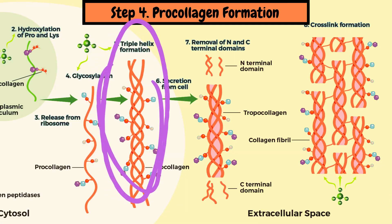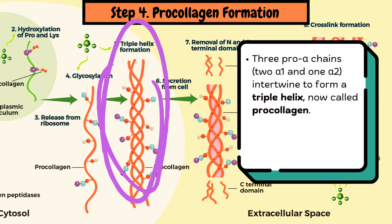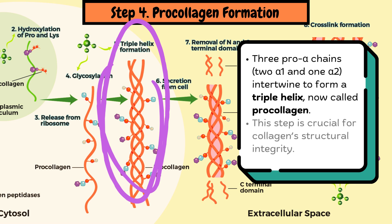Step 4: Procollagen formation. Three pro-alpha chains — two alpha-1 and one alpha-2 — intertwine to form a triple helix, now called procollagen. This step is crucial for collagen structural integrity.